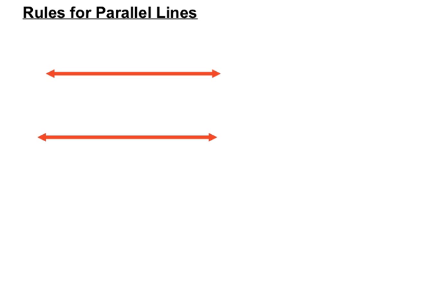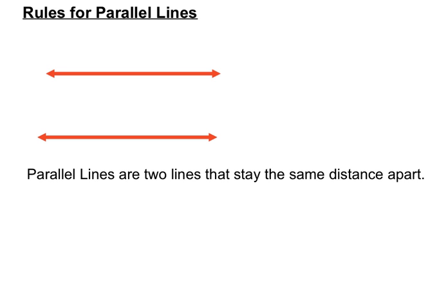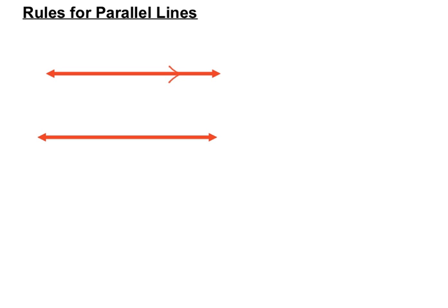Parallel lines are lines that never meet. They stay the same distance apart. Think of them as a straight railway pair of railway tracks. We indicate parallel lines by a couple of arrows on each of the lines, and if the arrows are there we are sure that they are definitely parallel lines.